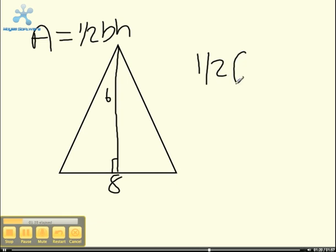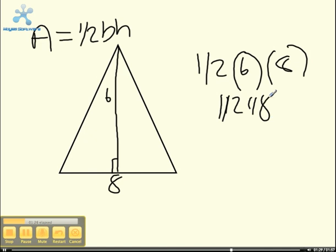So you'd times that and that would be your area, which would equal 48 divided by 2 equals 24, and that's your area.